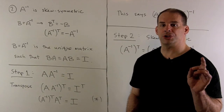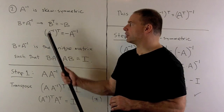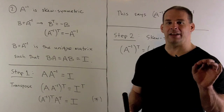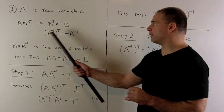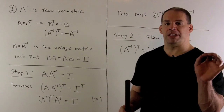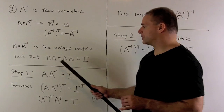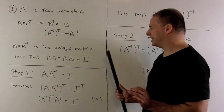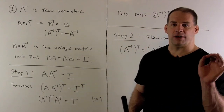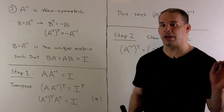Next, we're going to show that A inverse is skew-symmetric. So if B equals A inverse, we want to show that B transpose equals minus B. Note that if B equals A inverse, that means B is the unique matrix such that B times A equals A times B equals the identity matrix. In practice, if I can show that B times A or A times B equals the identity, we get the other side for free.